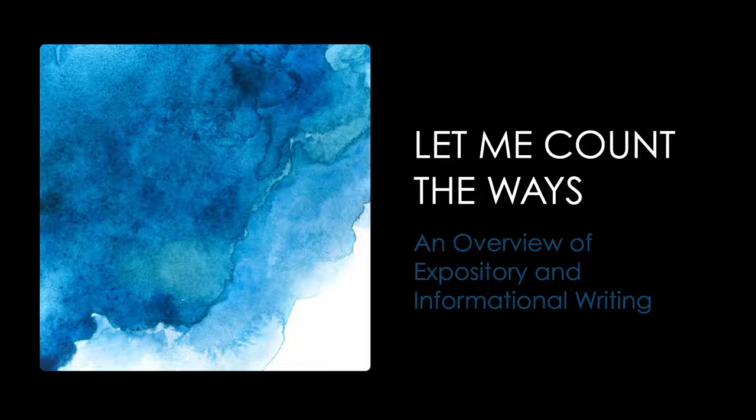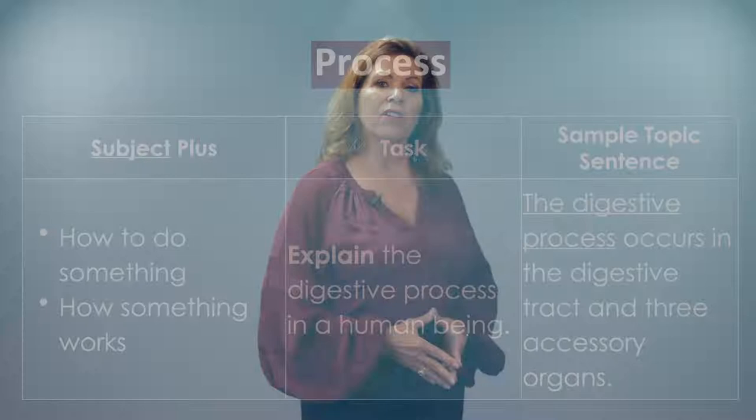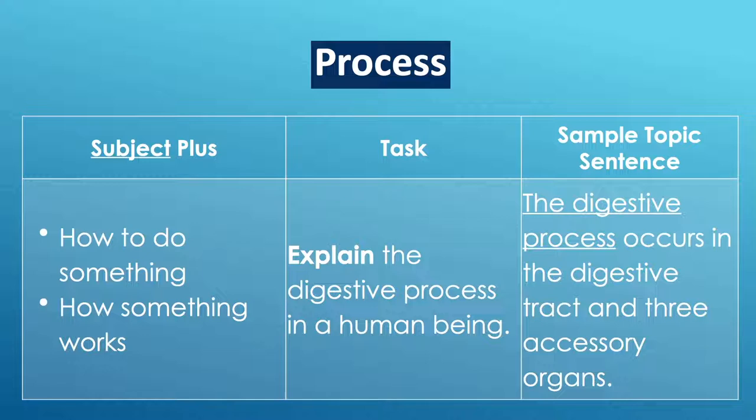What's sometimes a little confusing about expository is that there's not just one type of expository writing. For example, one form of expository is called process. In a process essay or short answer, you're going to explain how to do something or how something works, such as in science class when your teacher asks you to explain the digestive process in a human being.